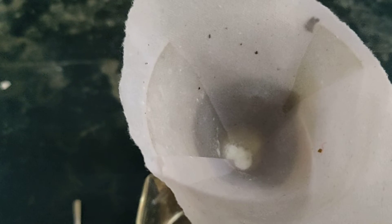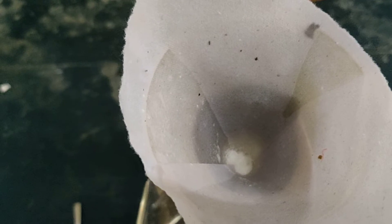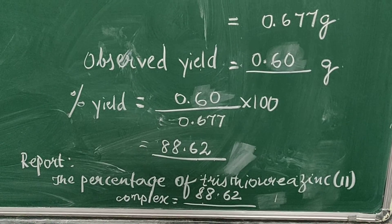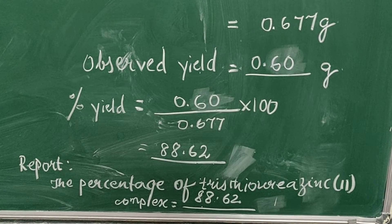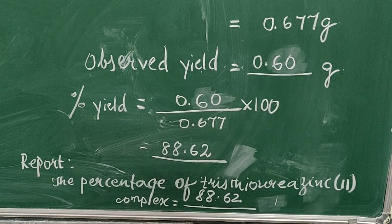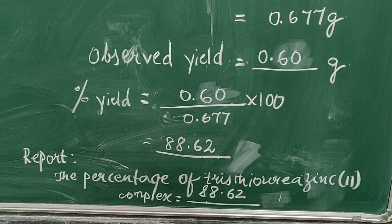After this I am going to remove it, dry it, weigh it, and then we shall look at the calculation part. After weighing the complex, the observed yield was 0.6 grams. Hence the percentage yield was found to be 88.62.